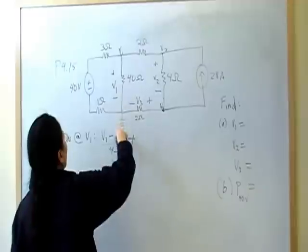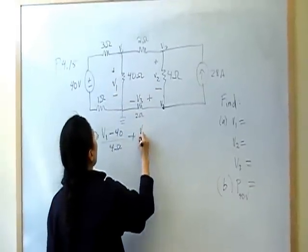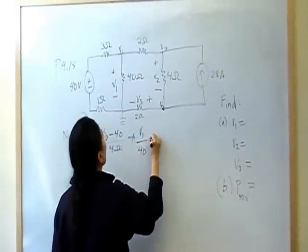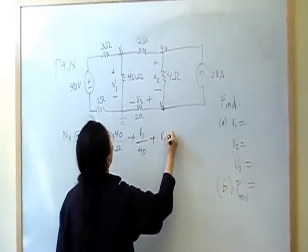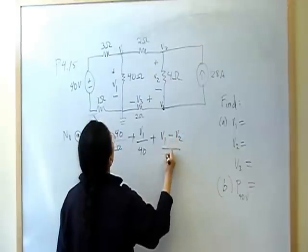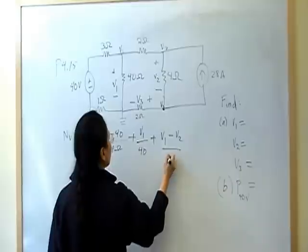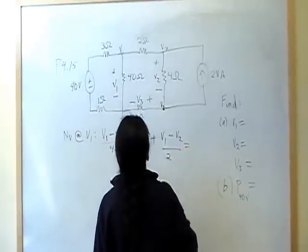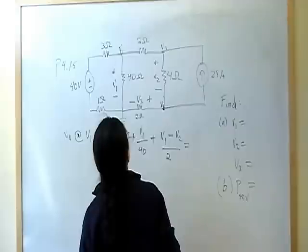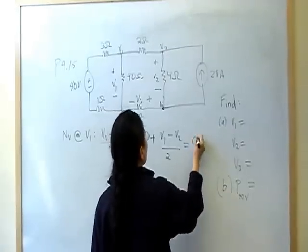Plus, right here, that's going to give me V1 over 40, plus V1 minus V2 over two. That's going to give me equals zero, right?